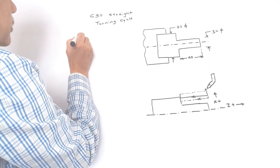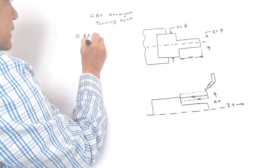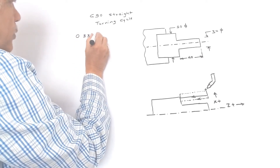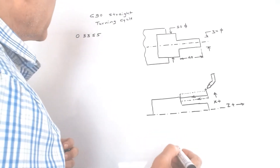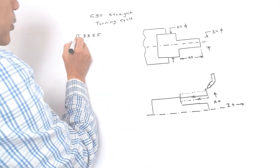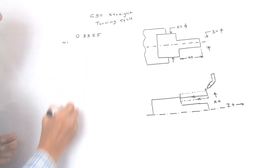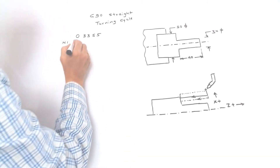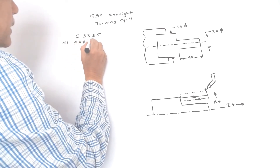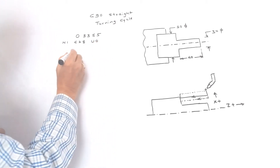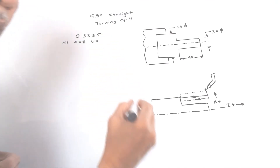First we have to write the program number — O3354. In FANUC control we can give a maximum 4-digit number as the program number. N1 is the first line or first block of the program. G28 U0 — the combined meaning of G28 U0 is: send the tool to the reference point for the X axis.